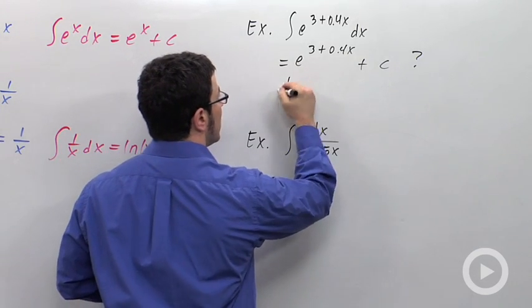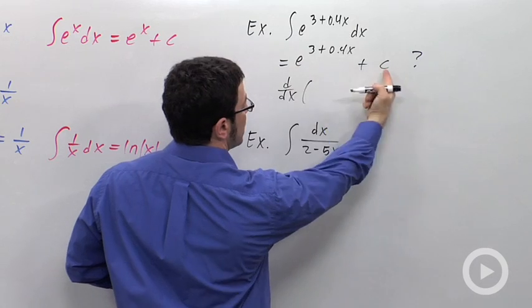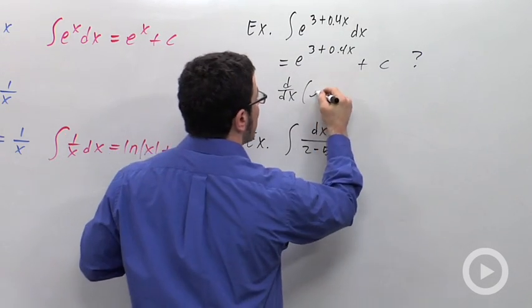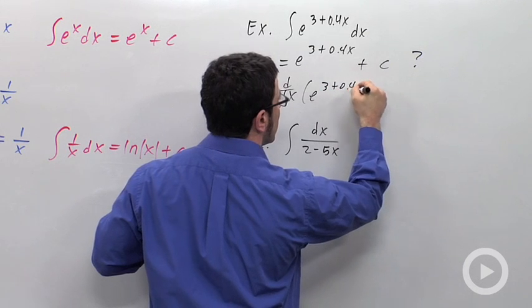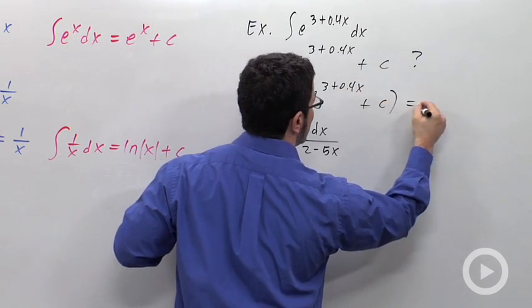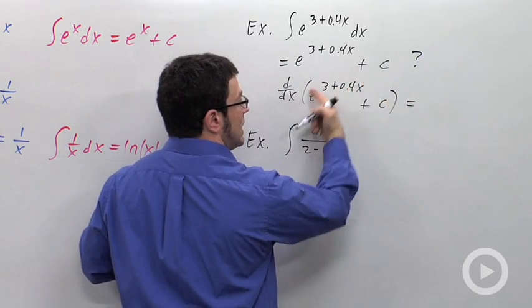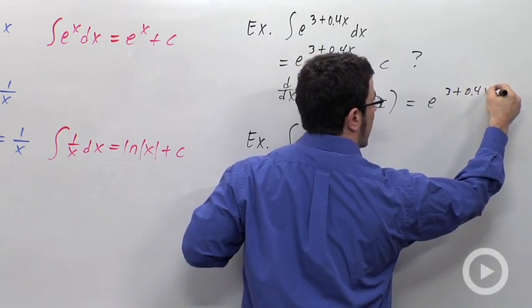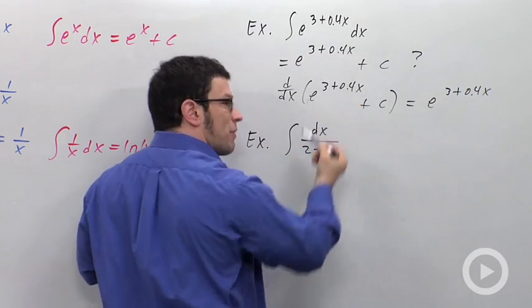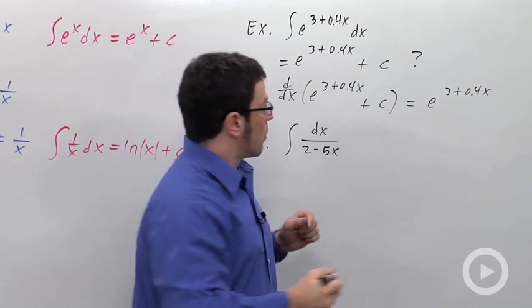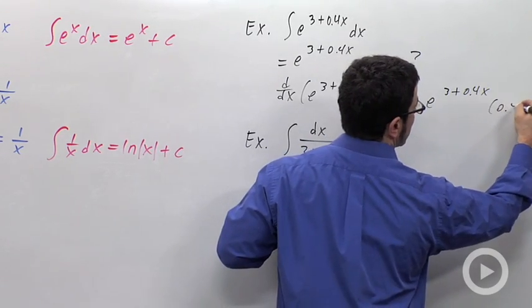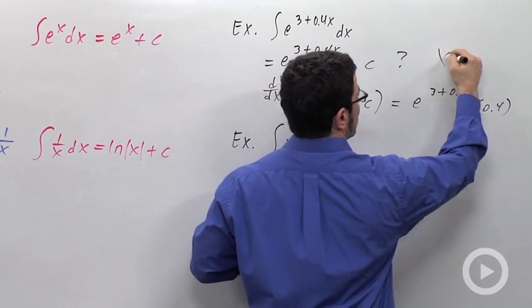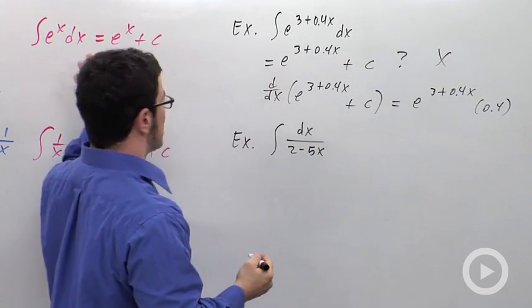The derivative, you differentiate the answer. You should get the original function that you were integrating. So the derivative of that is, you take the derivative of e to anything, and you get e to that power, e to the 3 plus 0.4x, times the derivative of 3 plus 0.4x, and that's 0.4. This is not what we started out with in the integral. So this is not true. So you can't just use this formula directly.